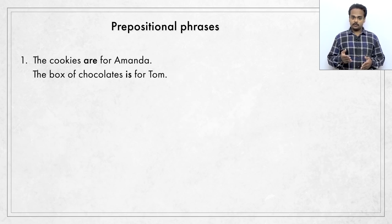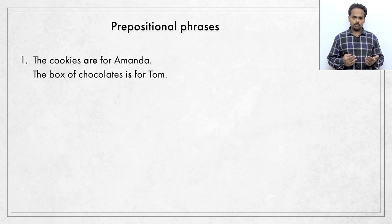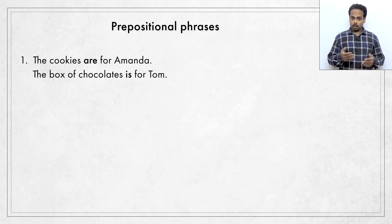Well, here's the answer. The cookies are for Amanda, and the box of chocolates is for Tom. But how come? Cookies is a plural noun, and chocolates is also plural. Yet, we have are in the first place, and is in the second. So, what's going on here? Well, with cookies, it's easy. Plural subject, so we say are.